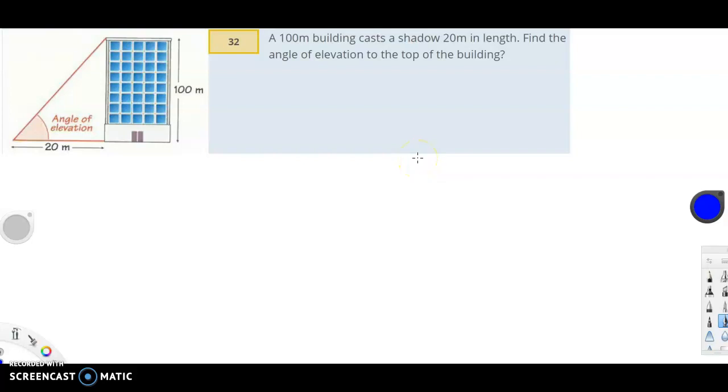A 100 meter building casts a shadow 20 meters in length. Find the angle of elevation to the top of the building. That's the angle marked here.